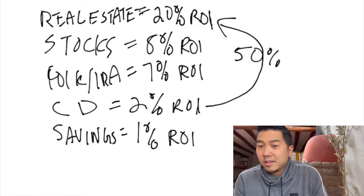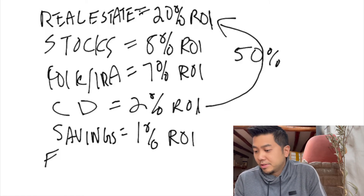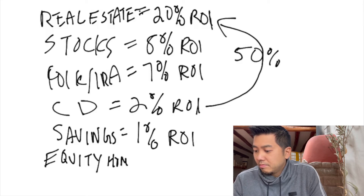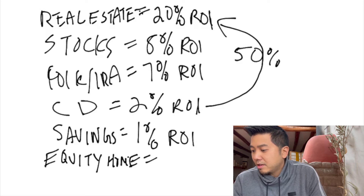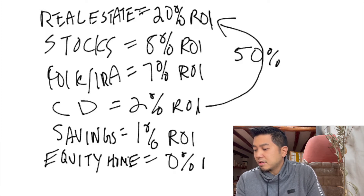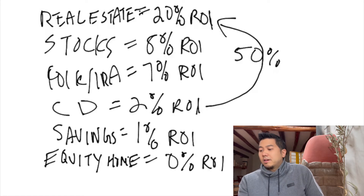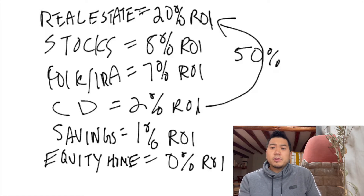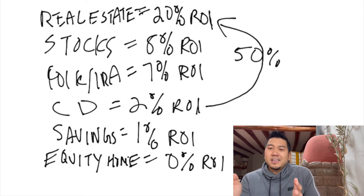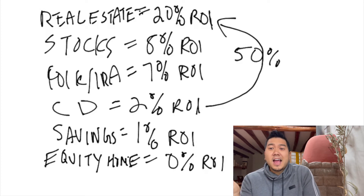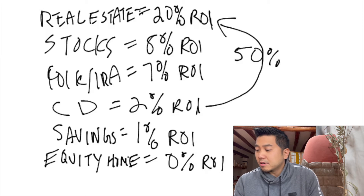There's also something else I forgot — people have their money tied up in their home equity. What is that money doing? It's actually giving you 0% ROI. You may ask: what about appreciation? Well, the money sitting in your home equity is technically not making you any extra money, because the property can still appreciate whether or not the equity sits there. That's why we say it's 0% ROI.